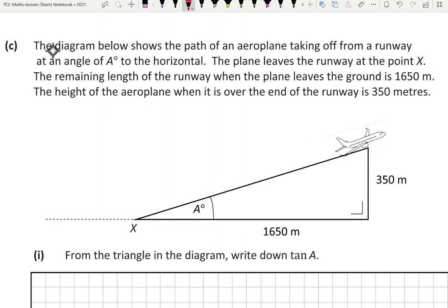The diagram below shows the path of an airplane taking off from a runway at an angle of A degrees to the horizontal. The plane leaves the runway at point X. The remaining length of the runway when the plane leaves the ground is 1650m. The runway obviously ends here, but the plane is airborne at that stage so it's okay.